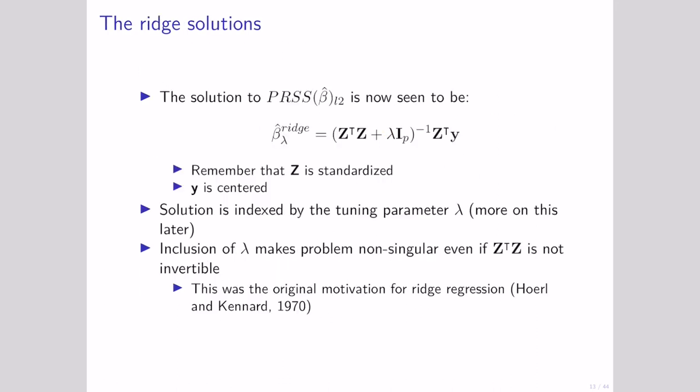Now we have this penalized sum of squared error, and just like ordinary least squares, we have a way to directly calculate this answer. I'm going to show you exactly how we can calculate this and prove this relationship. The solution we get is going to depend on how we pick this tuning parameter, and we'll come back to that in a bit.